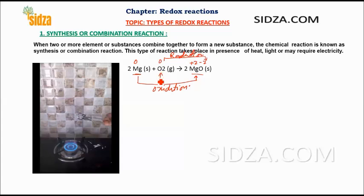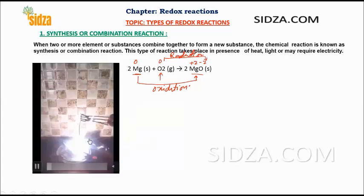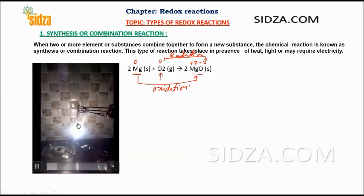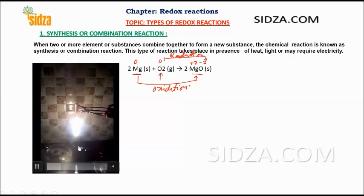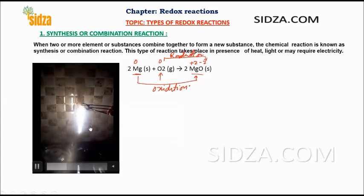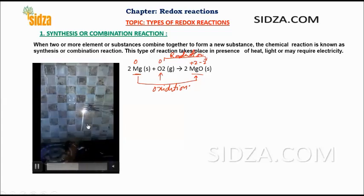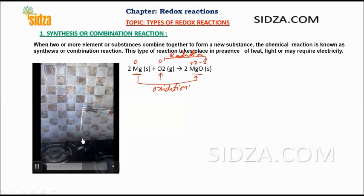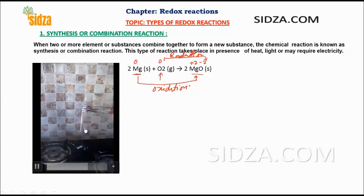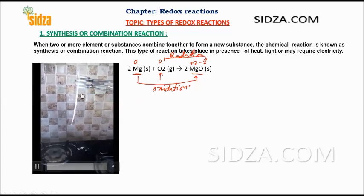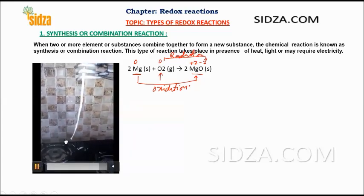Let's see how this reaction actually occurs. Here is the magnesium strip. Once we provide the ignition temperature to it, it starts burning with a dazzling flame. You can see it completely burns — the magnesium strip completely burns and we are left with the ashes. This is the magnesium oxide. So this is a redox reaction.